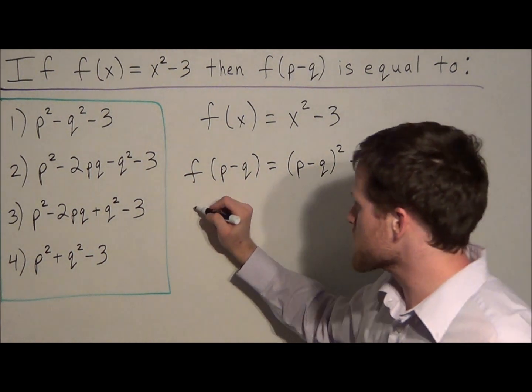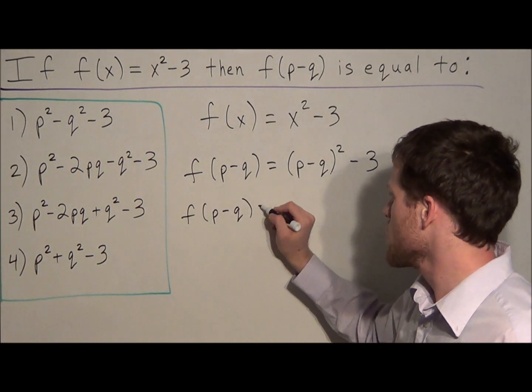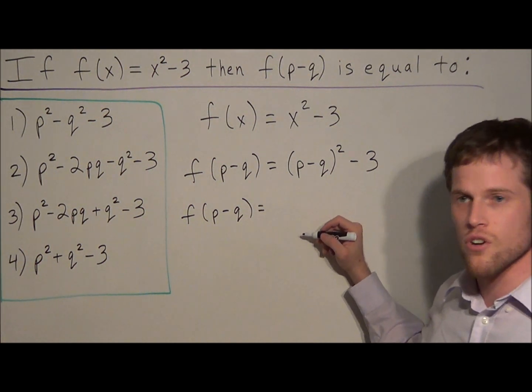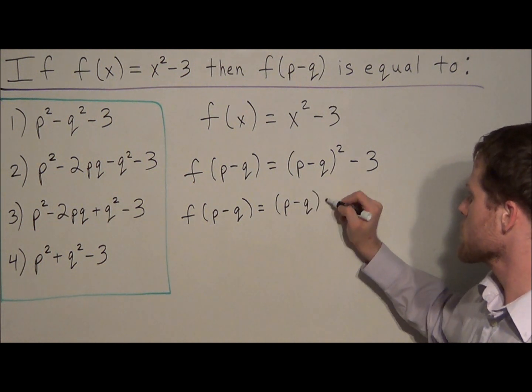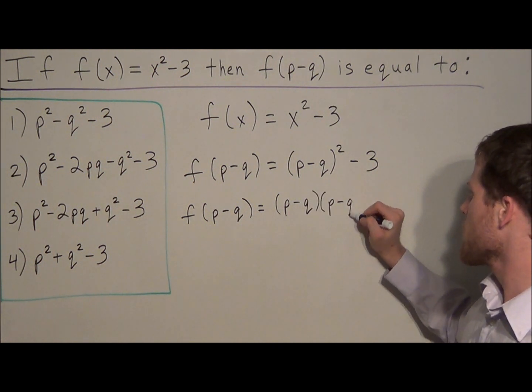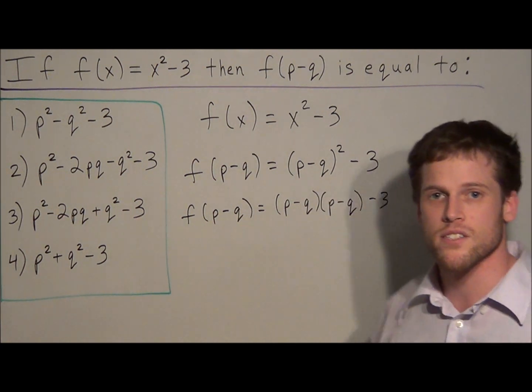So for the next step, to find out the value of f of p minus q, as you get better at this, you'll start to do it mentally, but we have to multiply p minus q times p minus q. That's what it means to square p minus q. We're multiplying it by itself twice.